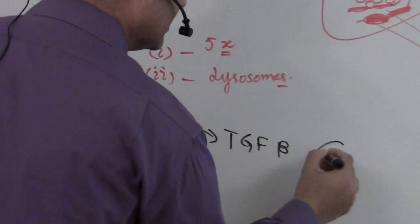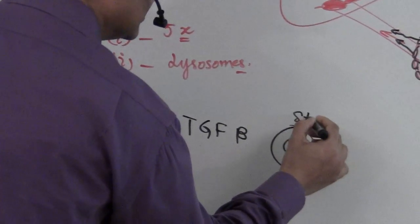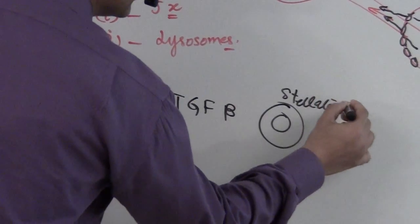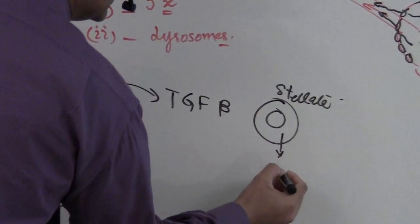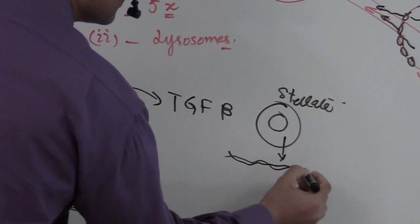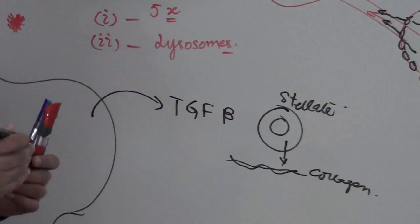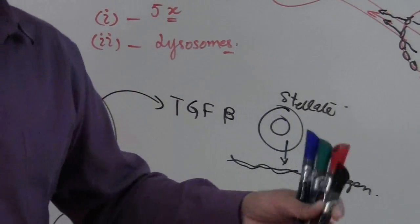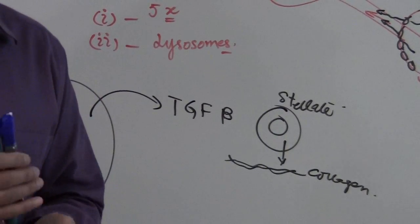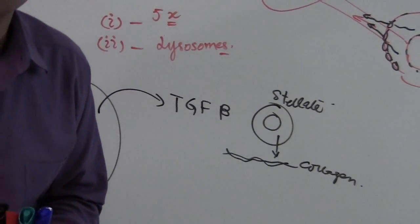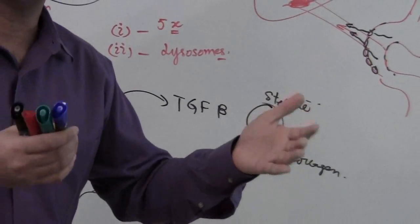TGF-beta acts on the stellate cells of the liver, causing the stellate cell to release collagen. When the collagen is released, it lays around in the matrix and causes fibrosis, leading to a cirrhotic liver.